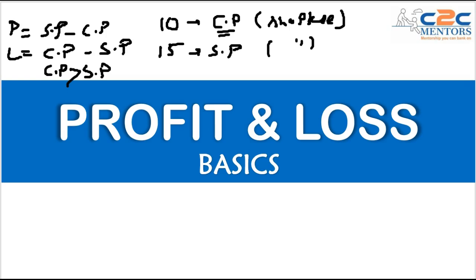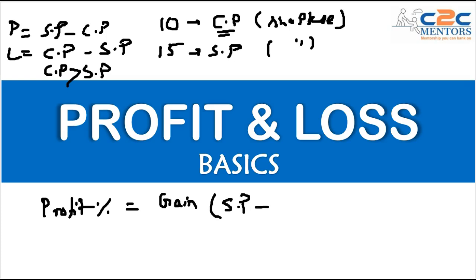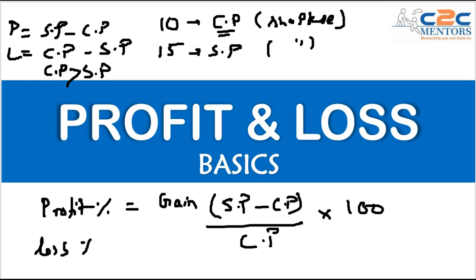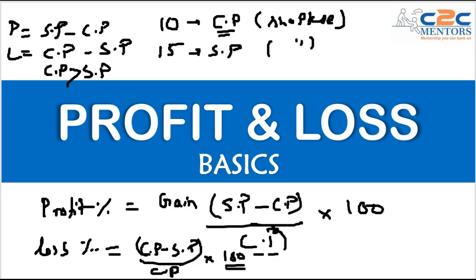Most of the time we are given profit percentage and loss percentage. Profit percentage, or gain, is defined as: selling price minus cost price, divided by cost price, multiplied by 100. For loss percentage, replace the numerator with cost price minus selling price — the rest remains the same. One important thing to note is that the denominator is always cost price.